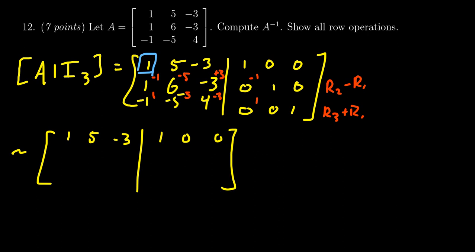And so performing this row operation, we don't do anything to the first row so just copy it down. 1, 5, -3, 1, 0, 0. The next one we're going to get 0, 1, 0, -1, 1, 0. And for the third row we get 0. We're going to get -5 plus 5 which is actually a 0. We're going to get 4 minus 3 which is 1. And then we get 1, 0, 1.